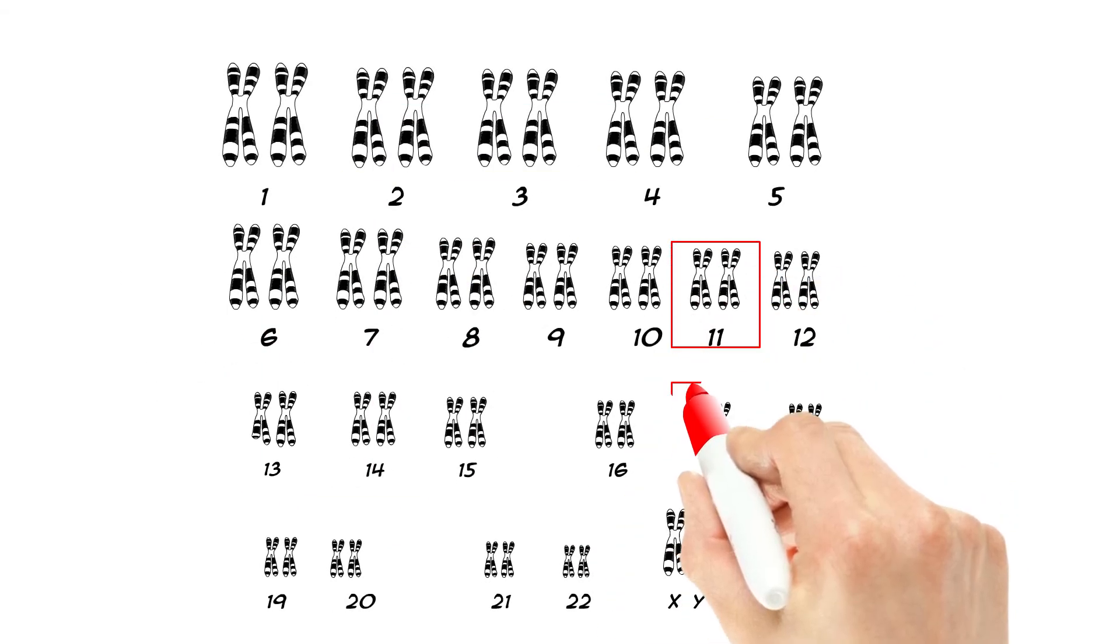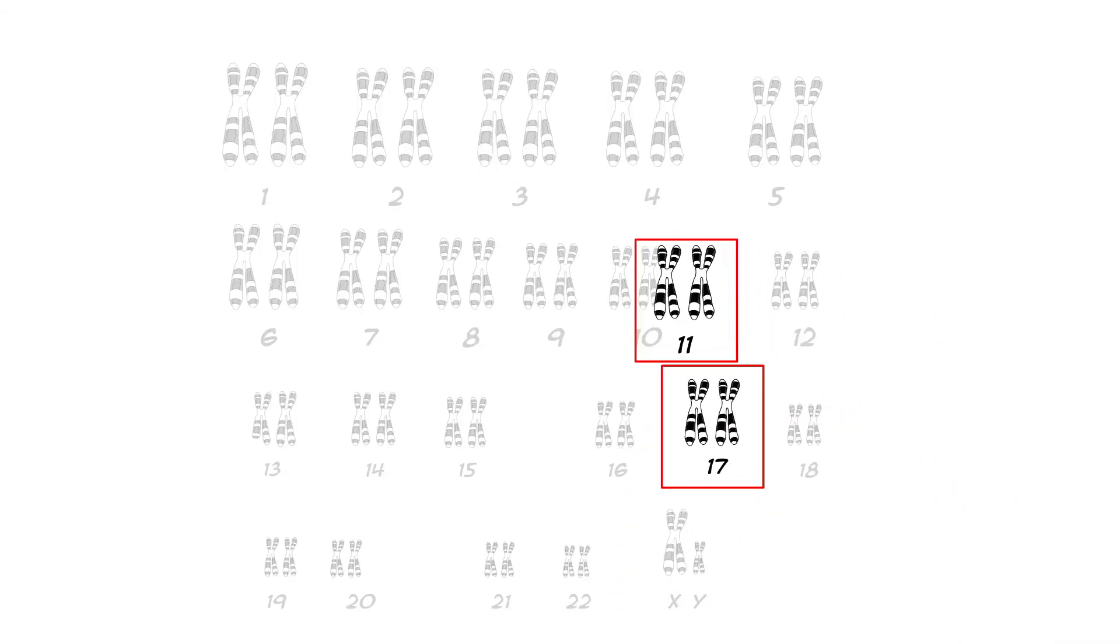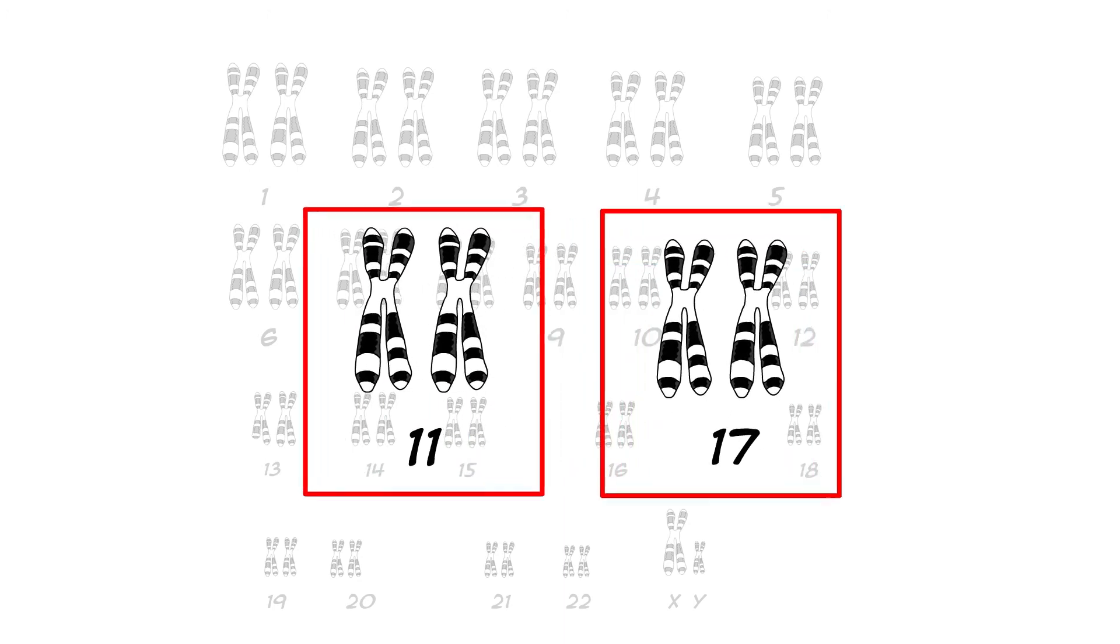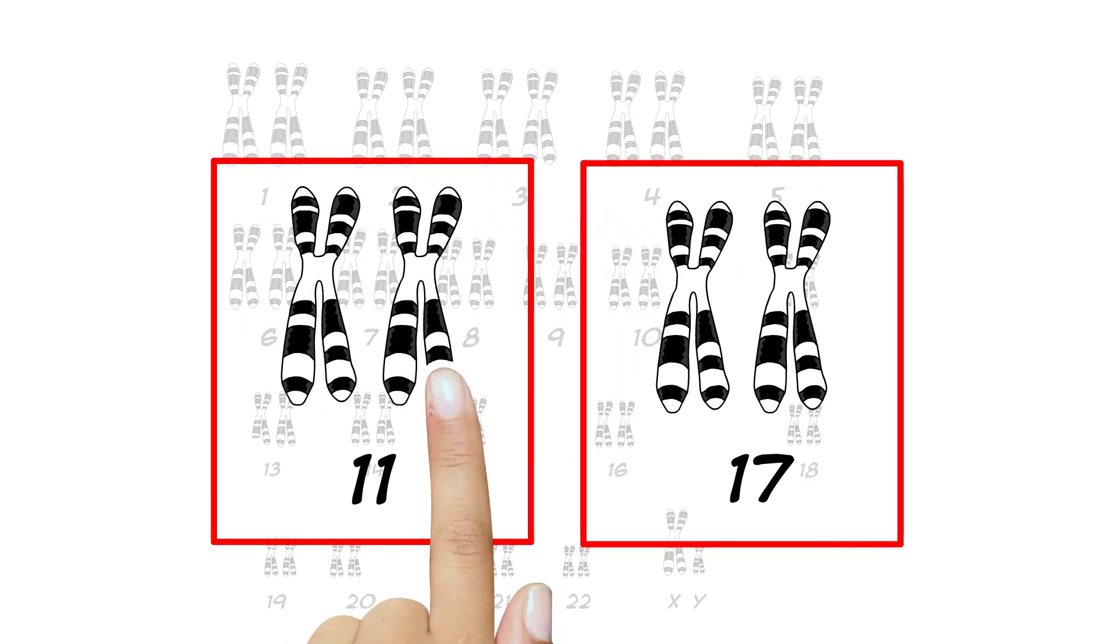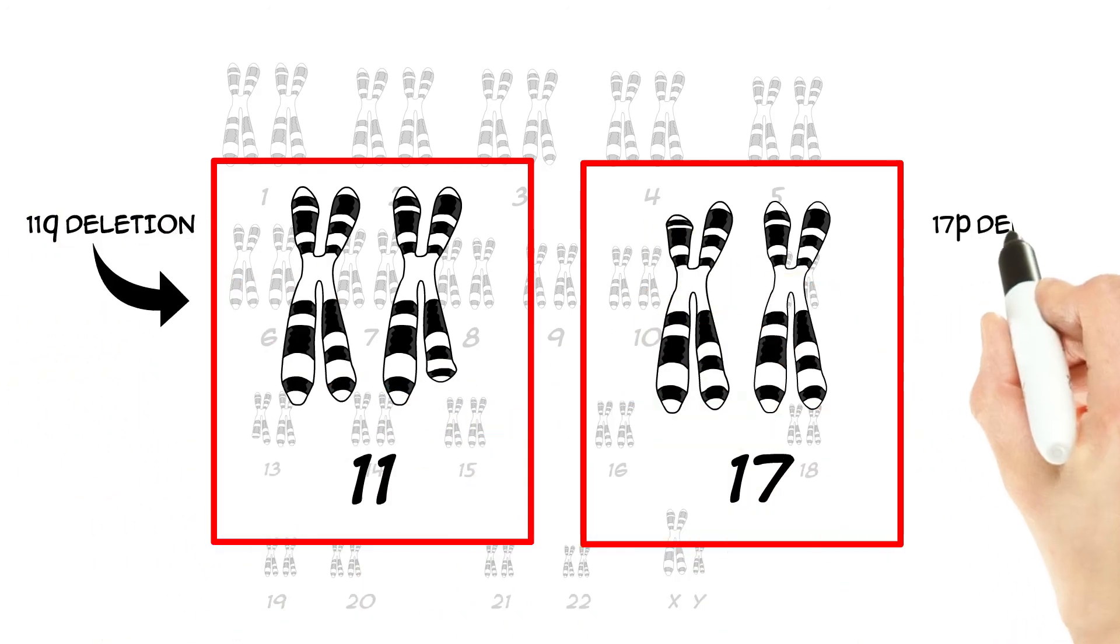Others have part of chromosome 11 or part of chromosome 17 missing. These changes are called 11q deletion and 17p deletion. The p or q depends on whether the missing part is from the short part or the long part of the chromosome.